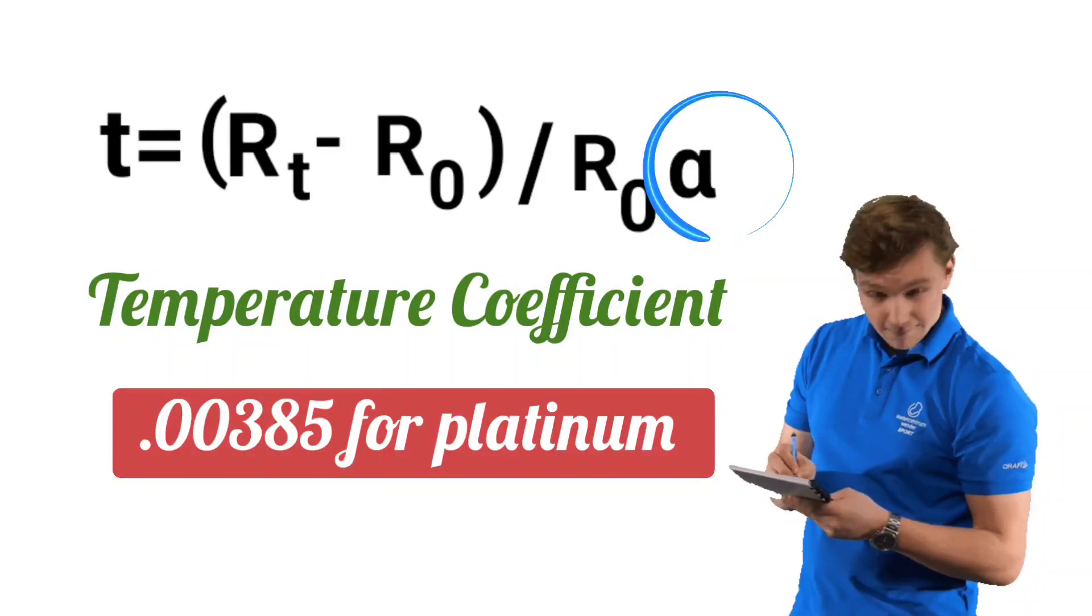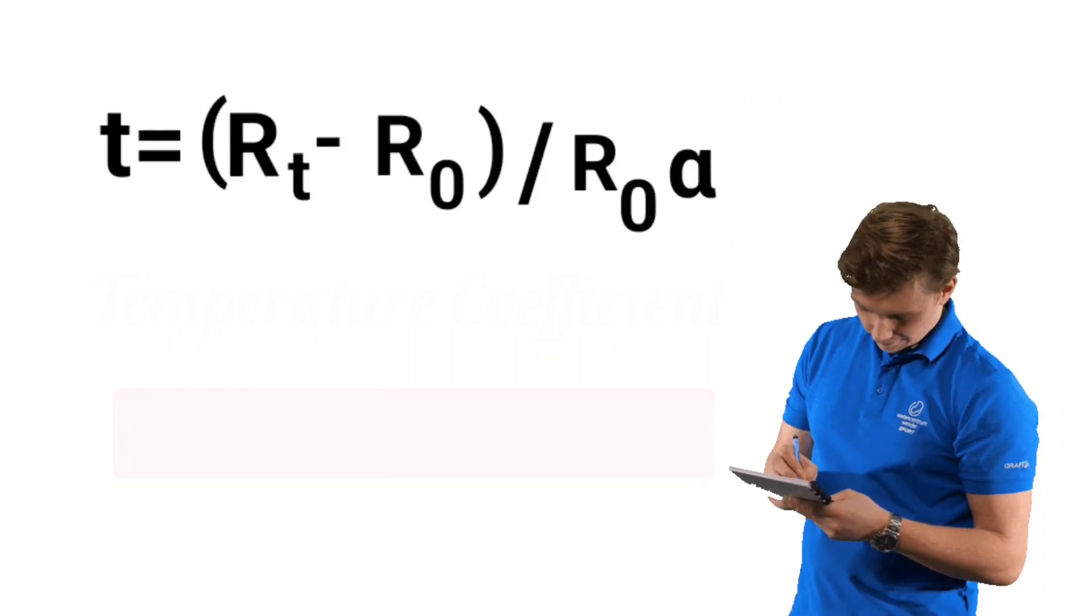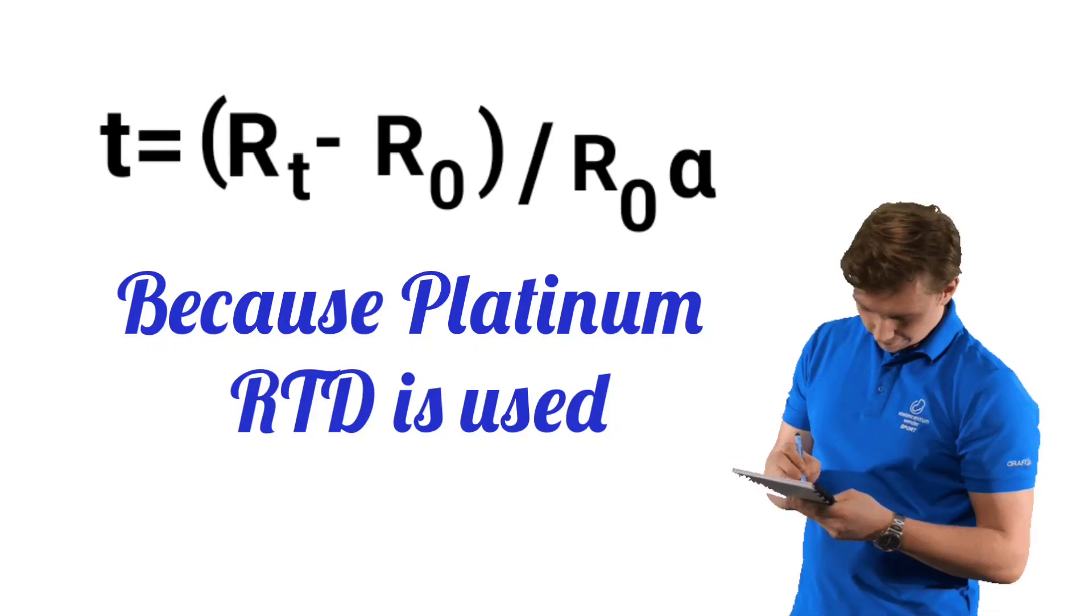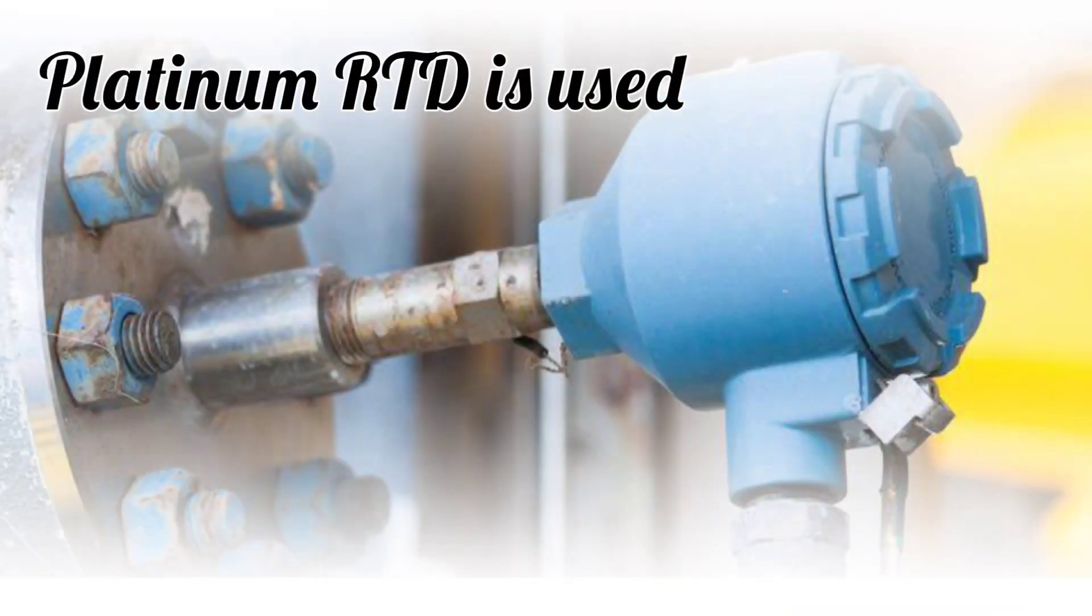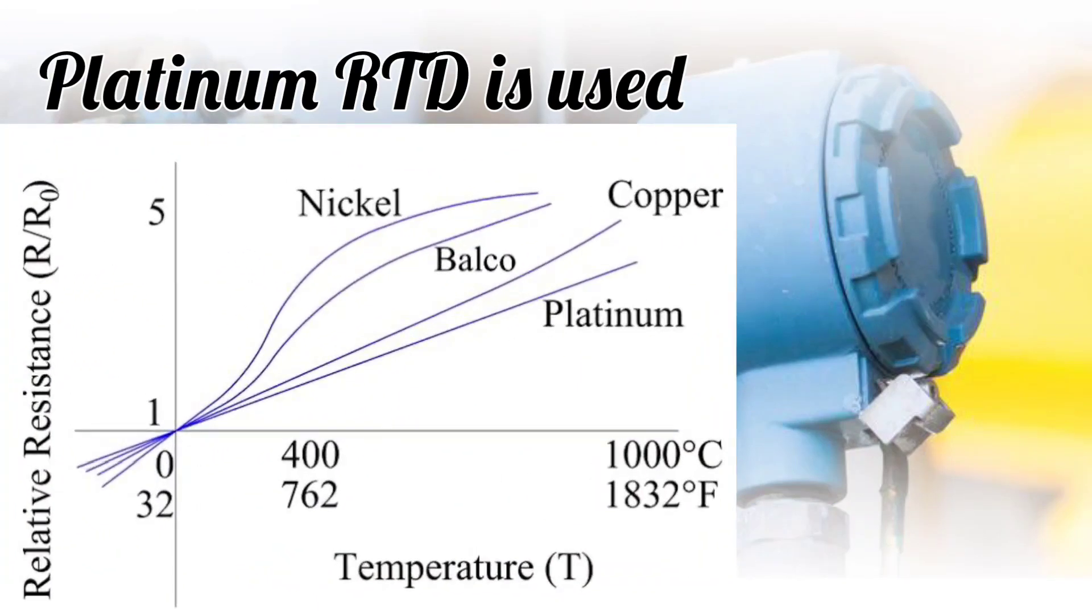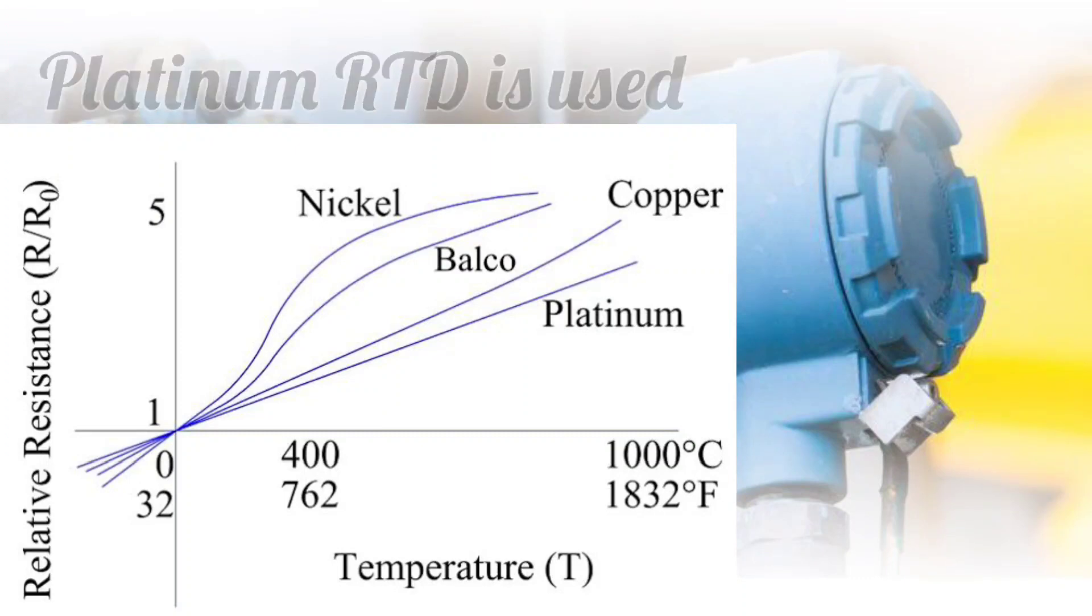Here alpha is taken for platinum because we use mostly the platinum RTD. The platinum RTD is used because the resistance of platinum varies most linearly with temperature, as compared to other materials.